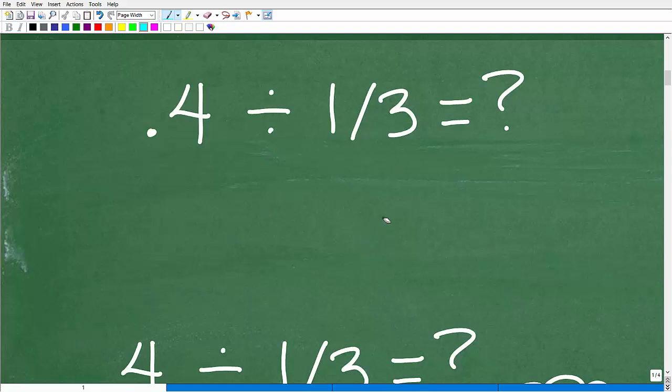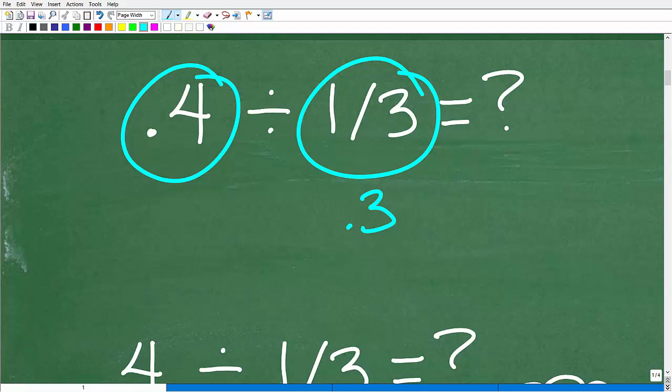I'm going to encourage you that if you have a fraction and you can convert your decimal to a fraction, typically that's going to be the easiest way. This fraction here, one-third, we could write as a decimal. But that's more than a decimal 0.3.